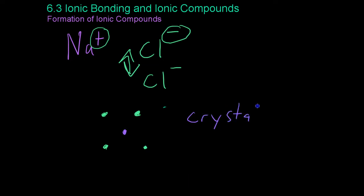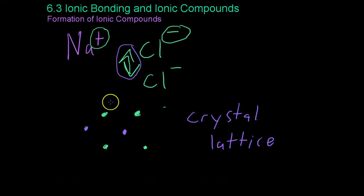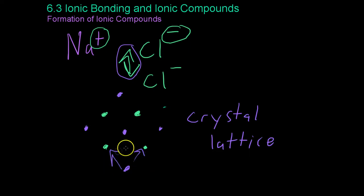And it forms in a way such that the attraction between these molecules is maximized while the repulsion is minimized. So it forms in a three-dimensional way where it's attracted because it's close to opposite ions. However, the repulsion is minimal because it's far away from like ions. And the same thing goes for the chlorine, which is farther away from other chlorines than it is from adjacent sodium ions.